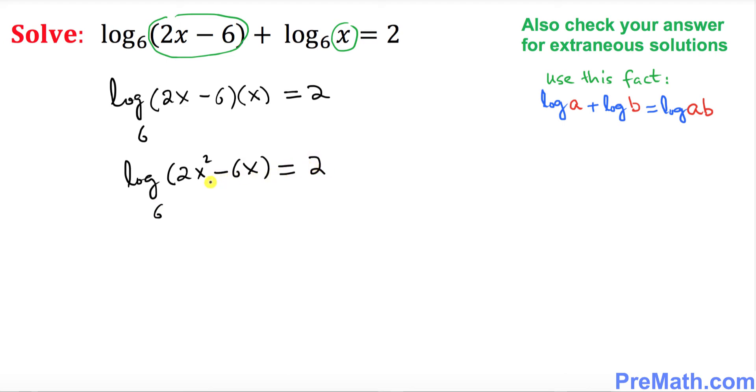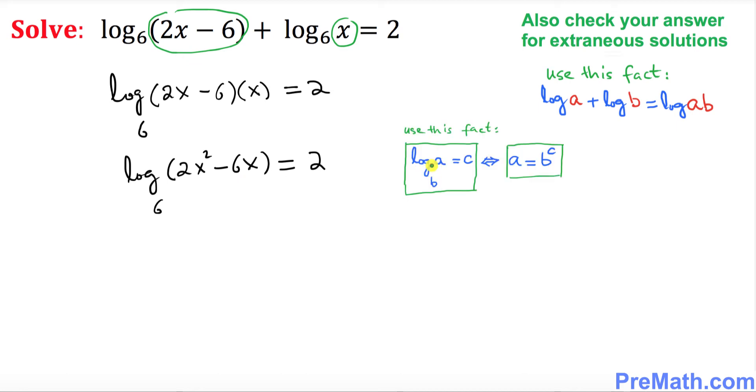Now is it possible that we can convert this equation into an exponential form? Because that's going to be a lot simpler. And we will be using this fact: if you want to convert from logarithmic form to exponential form, this is going to be our b, this part is going to be our a, and this part is going to be c. Then we can write the exponential form as 2x squared minus 6x equal to 6 to the power 2.